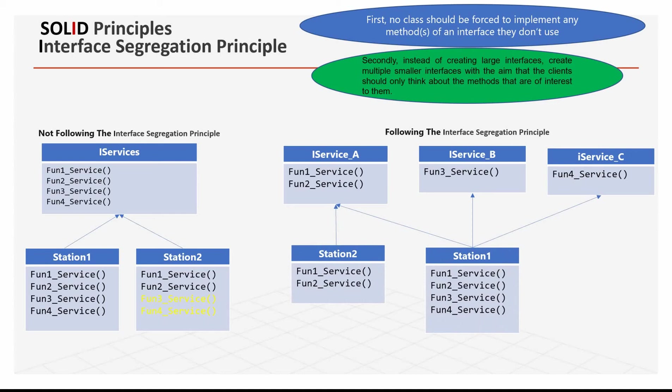Function 1 needs to use function 3 and function 4 — that's function 3 from iService B and function 4 from iService C.